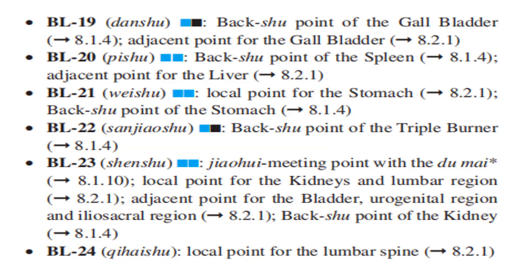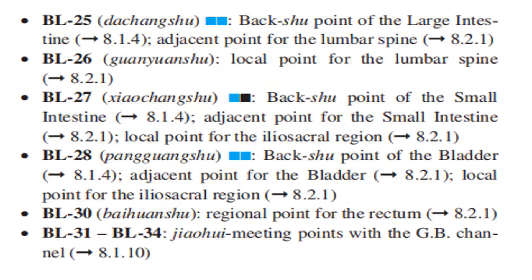Bladder 23 is the local point for the kidneys and lumbar region, the adjacent point for the bladder and urogenital region and ileo-sacral region, and the Back-Shu Point of the Kidney. Bladder 24 is the local point for the lumbar spine. Bladder 25 is the Back-Shu Point of the Large Intestine and the adjacent point for the lumbar spine.